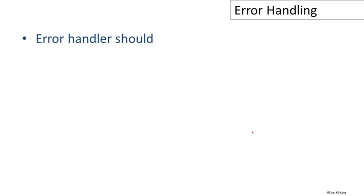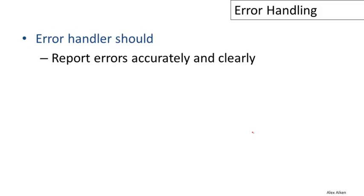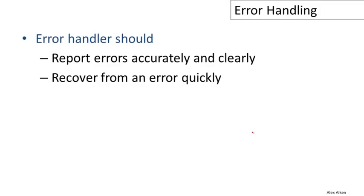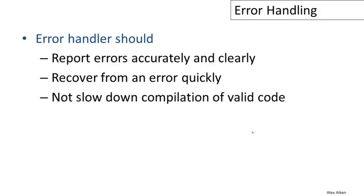So what are the requirements for good error handling? We want the compiler to report errors accurately and clearly so that we can identify the problem quickly and fix it. The compiler itself should recover from the error quickly — when it hits an error, it shouldn't take a long time before proceeding. And finally, we don't want error handling to slow down the compilation of valid code; we shouldn't pay a price for error handling if we're not really using it.